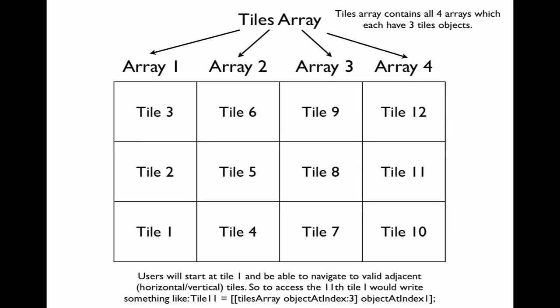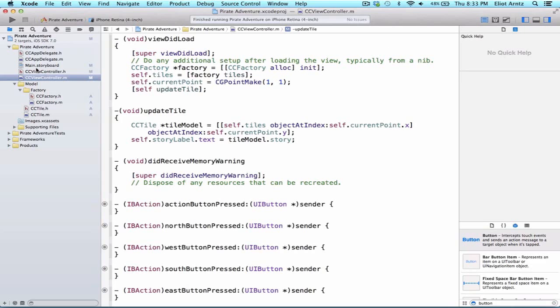The next problem we need to solve is how to hide our navigation buttons. For example, if we're at tile 1, we should only have the ability to move north or east — we should not have the south and west option. So we're going to create some code to hide our buttons dynamically and figure out how to do that in code.